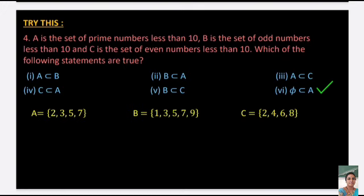Try this: A = set of all prime numbers less than 10, so A = {2, 3, 5, 7}. B = set of all odd numbers less than 10, so B = {1, 3, 5, 7}. C = set of even numbers less than 10, so C = {2, 4, 6, 8}. Checking: A ⊄ B, B ⊄ A, A ⊄ C, C ⊄ A, B ⊄ C. Since none of the sets is a subset of another, the correct answer is that φ is a subset of every set.